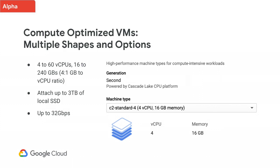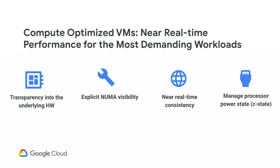We're also happy to introduce these VMs with new networking caps announced today, offering directly up to 32 gigabits per second. Going beyond the shapes and hardware, we've really focused on making the compute-optimized VMs the best option for near real-time and highly demanding workloads. These VMs give you full transparency into the underlying hardware and explicit NUMA visibility, so you get the best performance across the different VM types and sizes, with very tight consistency and very predictable performance.